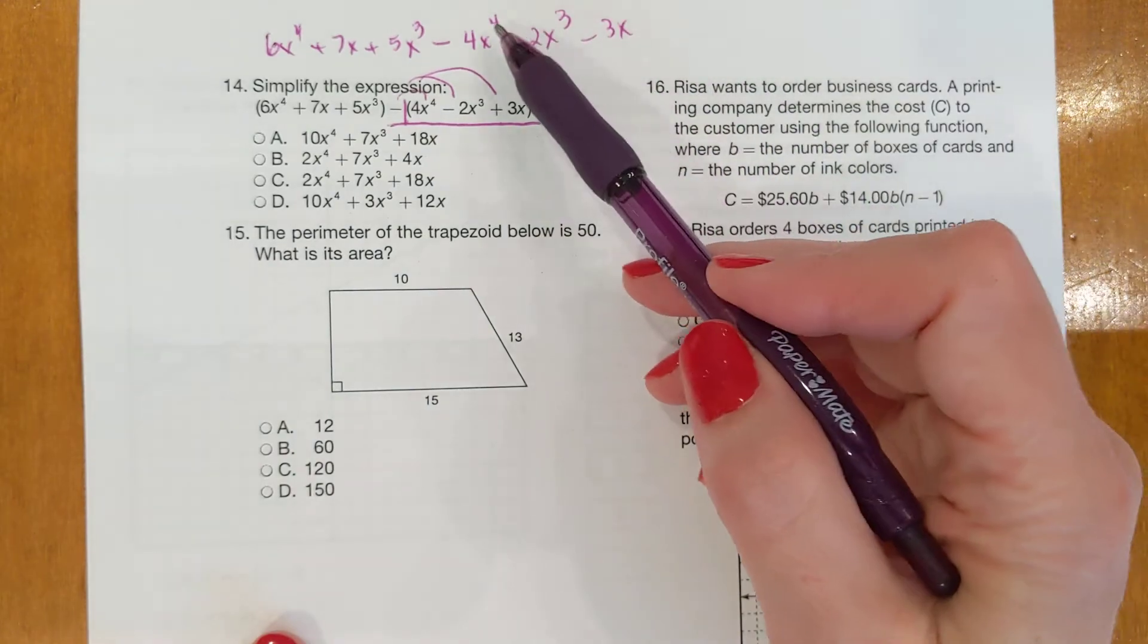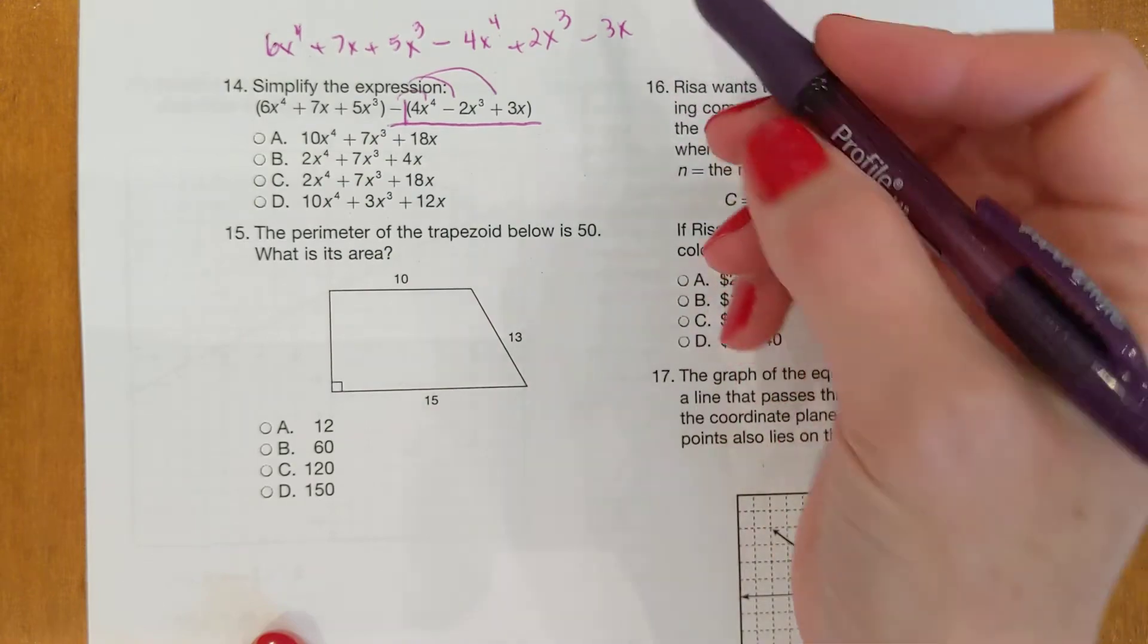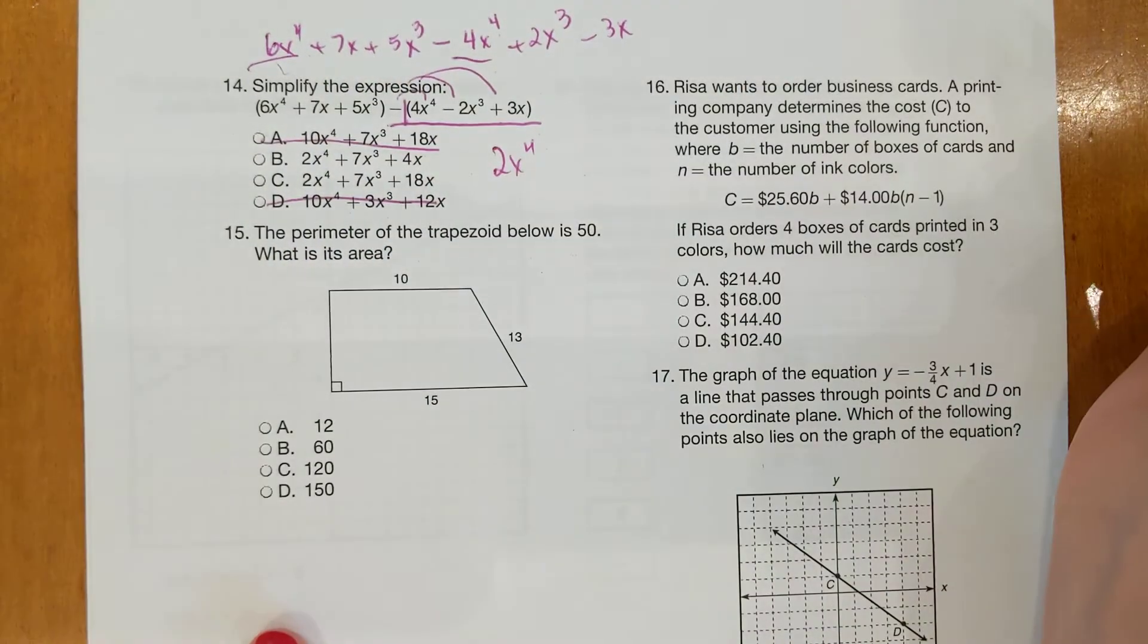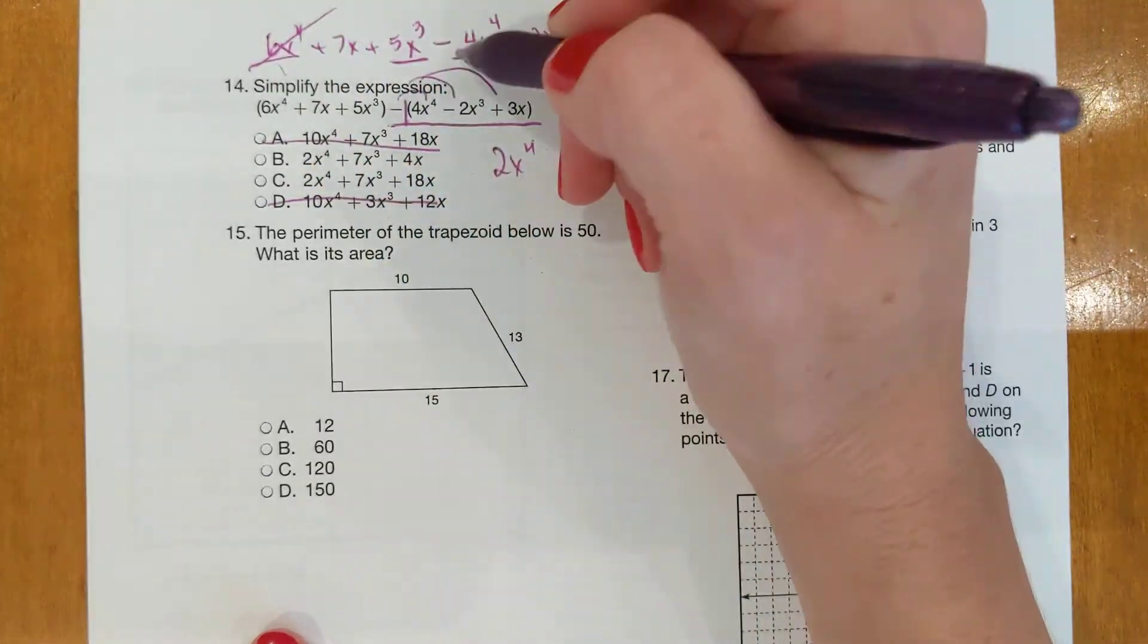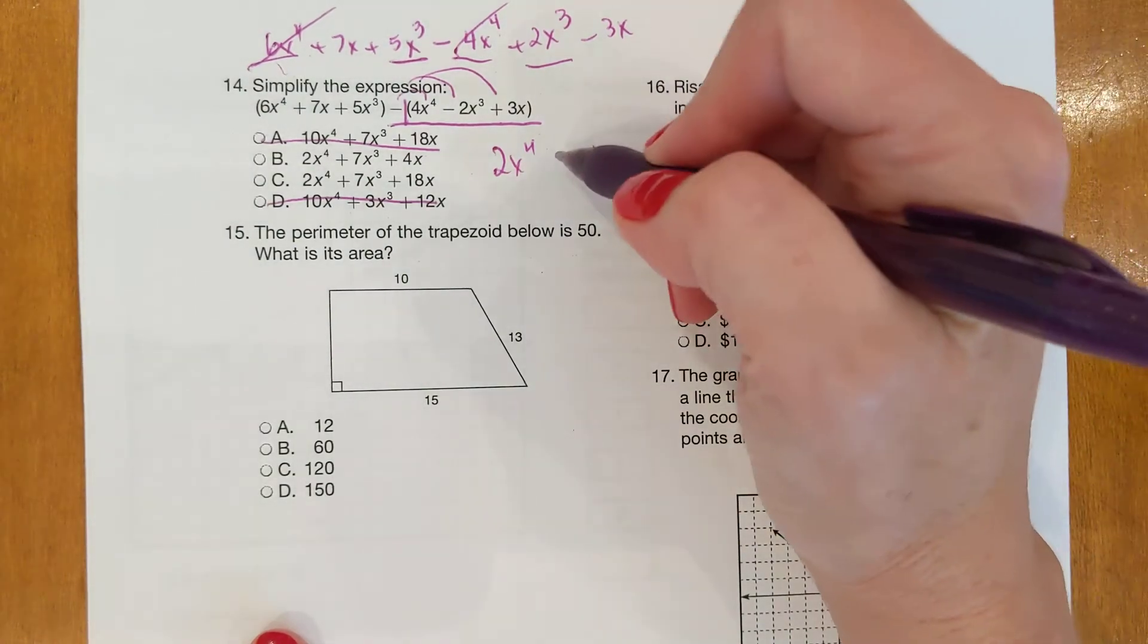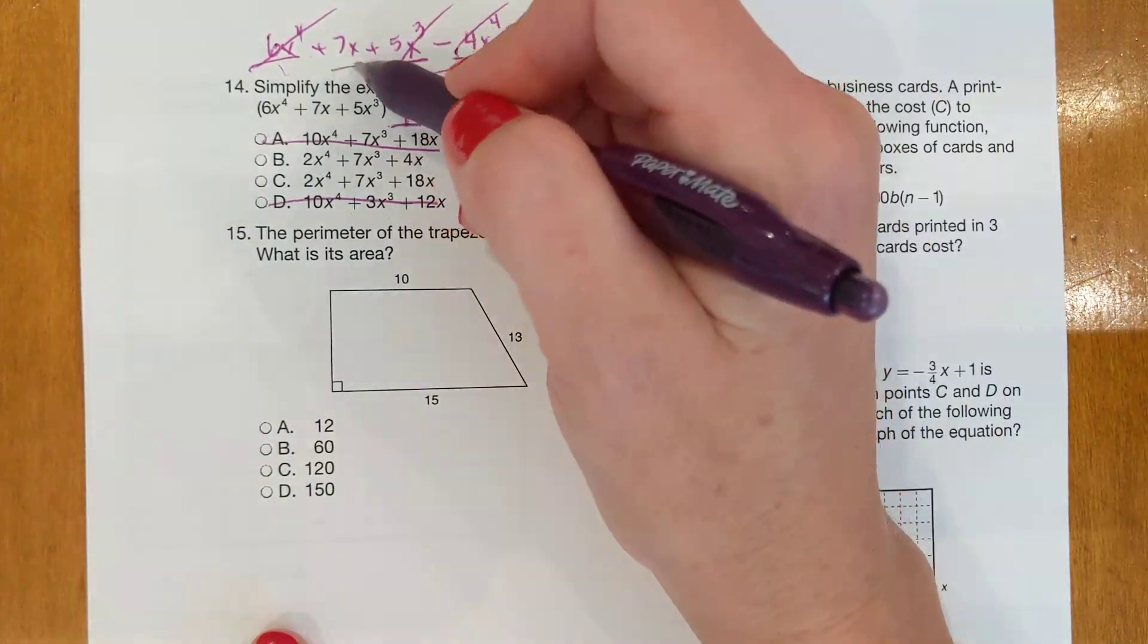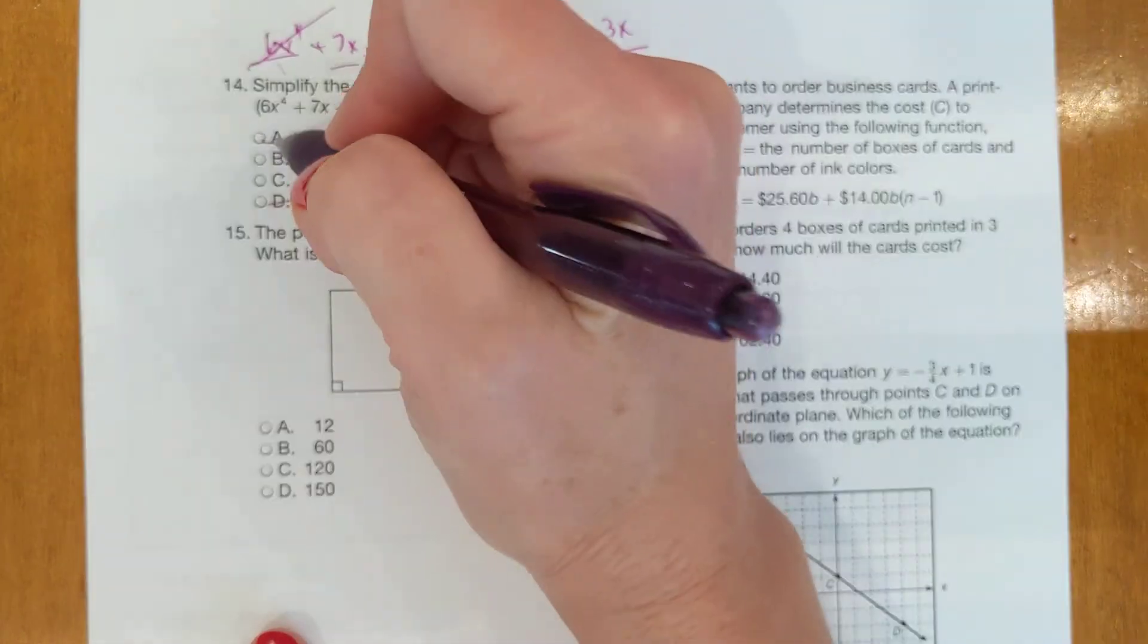Starting with the highest power, which is the 4, we have 6x to the 4th minus 4x to the 4th. 6 minus 4 is 2, so 2x to the 4th. Well, that takes care of those two. The next power up is the 3. We have 5x to the 3rd and 2x to the 3rd. 5 plus 2 is 7, so 7x to the 3rd. They both have a 7, so that doesn't help. Last of all, the x's. 7x minus 3x. 7 minus 3 is 4, so 4x. So, it's B.